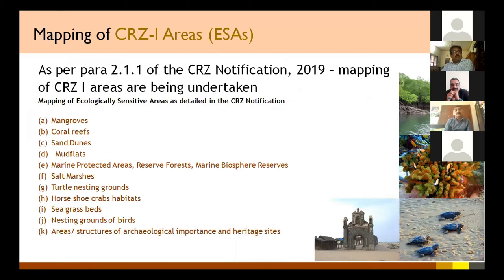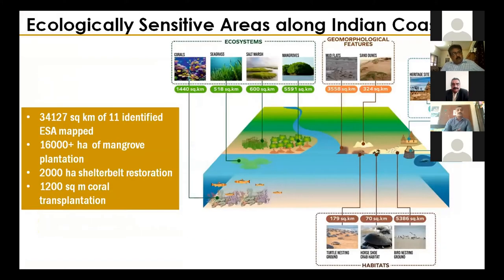The CRZ 2019 notification — the latest one — defines ecologically sensitive areas from category A to K. There are about four ecosystem types: mangroves, coral reefs, sand dunes, and mudflats. Then there are protected areas covering reserve forests, biosphere reserves, national parks, sanctuaries, and community reserves. Additionally, there are habitats like turtle nesting grounds, horseshoe crab habitats, and bird nesting grounds, along with archaeological and heritage sites. The full mapping exercise began in 2013.